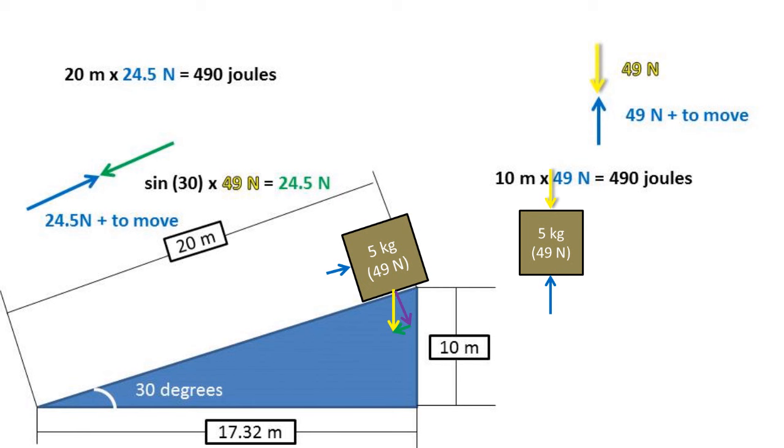Notice that if we take the formula for work, force times distance, we get the same amount of work. 20 meters times 24.5 newtons equals 490 joules, and 10 times 49 newtons equals 490 joules.